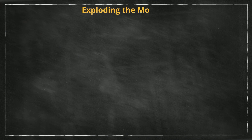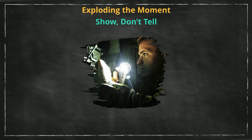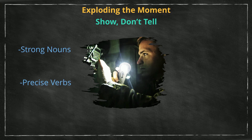And lastly, let's use the show-don't-tell method to explode the moment. Showing in our stories means developing the events using realistic details your readers can identify with. This is where you write using specifics: strong nouns, precise verbs, actions we can see and hear, and reactions we can feel.